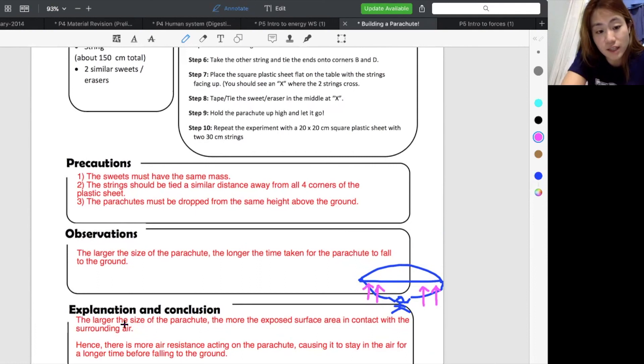That's why I bring up this experiment. Because this experiment talks about air resistance. Air resistance is also a form of friction. And friction is a what? Friction is a force. So how do I explain this? I say that the larger the size of the parachute, the more the exposed surface area in contact with the surrounding air. That's one. Hence, there's going to be more air resistance. So this is the important part here. There's going to be more air resistance acting on the parachute. That's why it can stay in the air for a longer time.